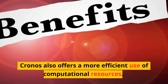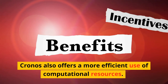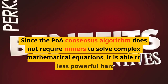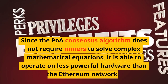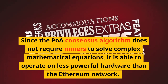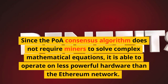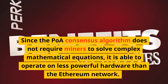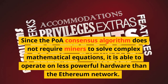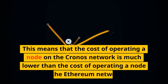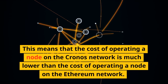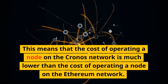Kronos also offers a more efficient use of computational resources. Since the POA consensus algorithm does not require miners to solve complex mathematical equations, it is able to operate on less powerful hardware than the Ethereum network. This means that the cost of operating a node on the Kronos network is much lower than the cost of operating a node on the Ethereum network.